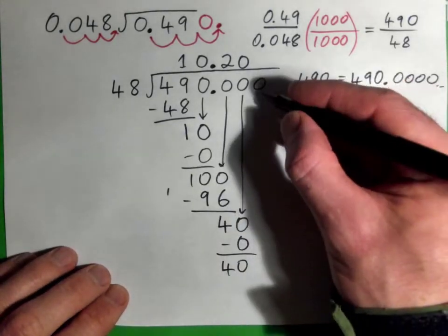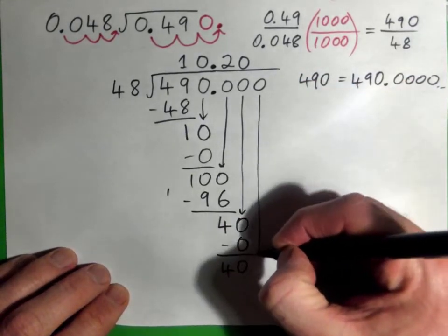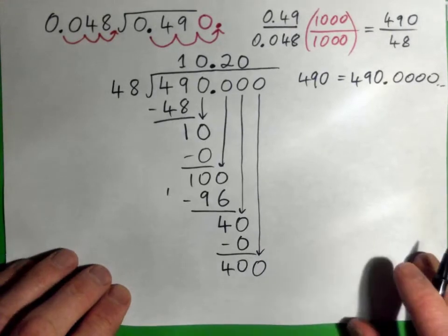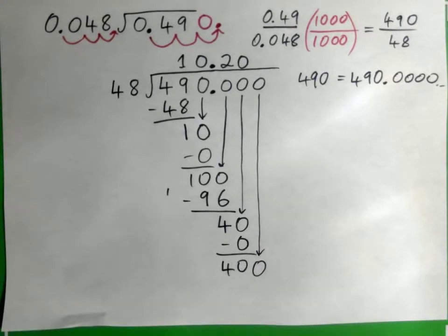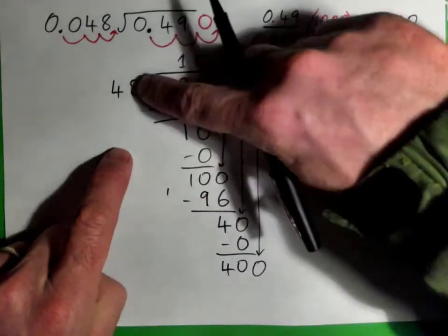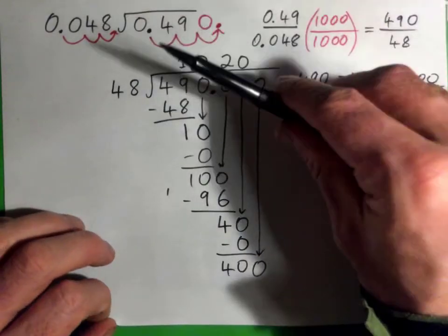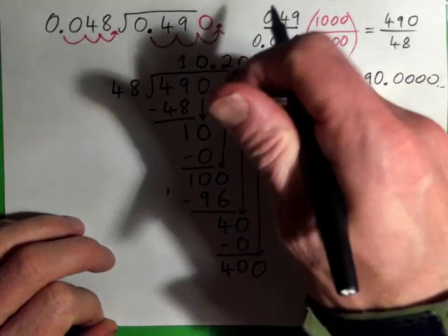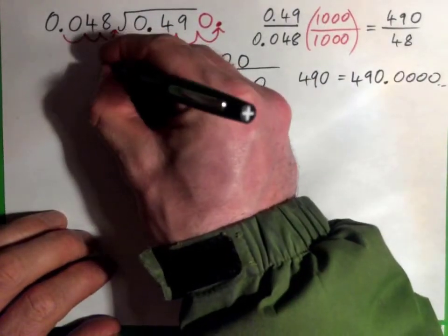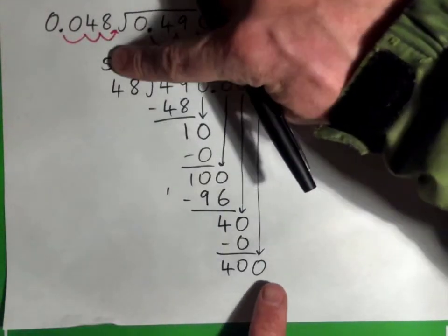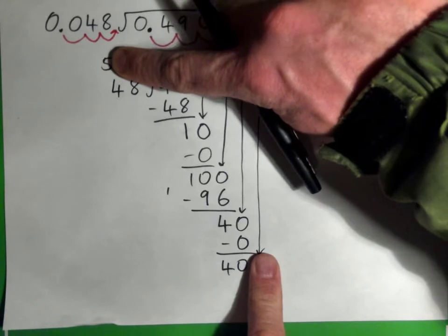We need to bring this 0 down to be 400. So what's 48 into 400? That's a good guess. So 48 is almost 50. So it's kind of like 50, or it's kind of like 5 into 40. Think about 5 into 40.